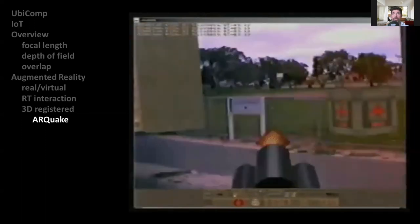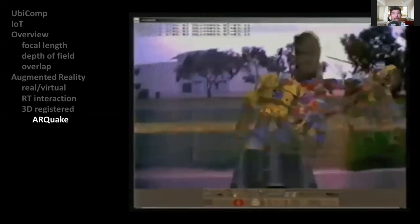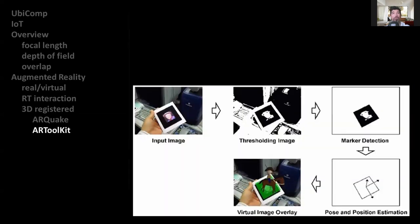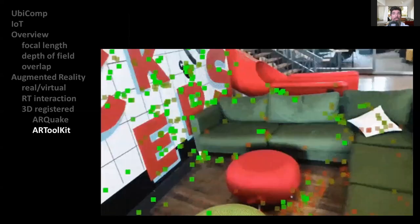However, in 1999, AR Toolkit was released as an open-source computer tracking library for creation of strong augmented reality applications that overlays virtual imagery on the real world. In order to create strong augmented reality, it uses video tracking capabilities that calculate the real camera position and orientation relative to square physical markers or natural feature markers in real time.